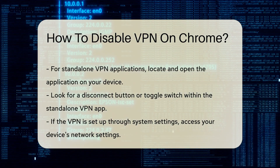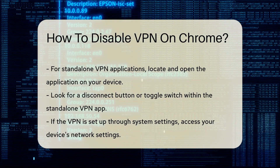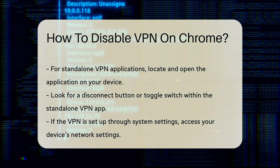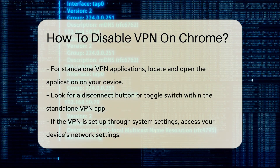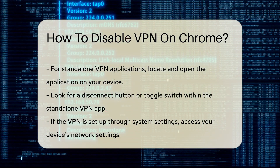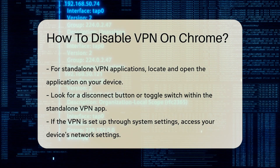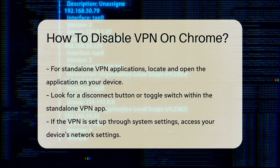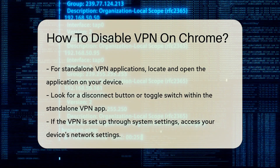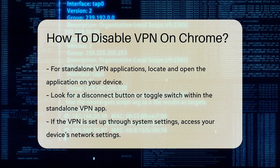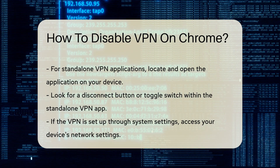If you are using a VPN extension, begin by locating the extension icon in the upper right corner of the Chrome interface. Click on the icon to open the extension menu. Most VPN extensions will have an option to disconnect or disable the VPN service directly from this menu.